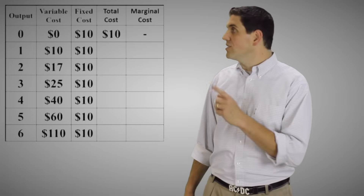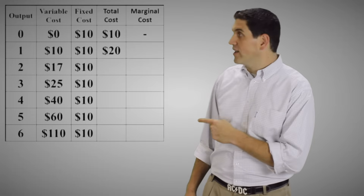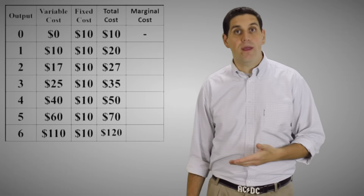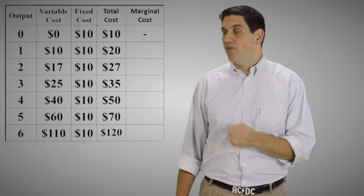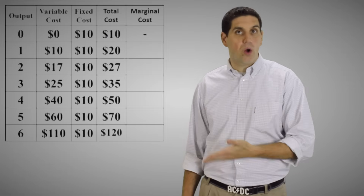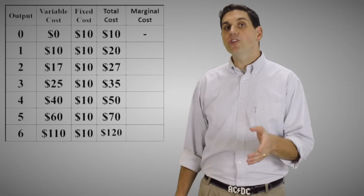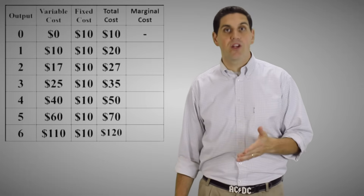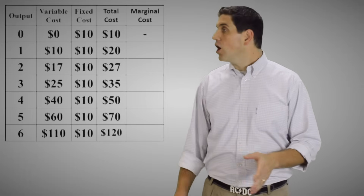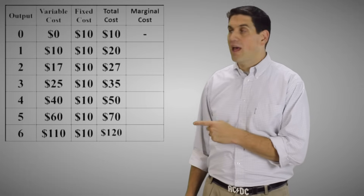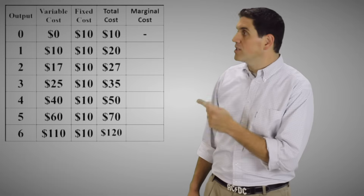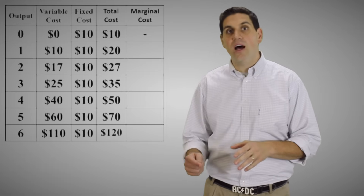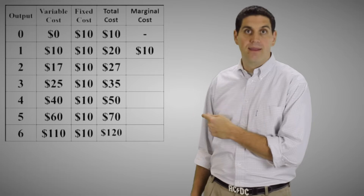For one unit it's $20. For two units it's $27. Then $35, $50, $70, and $120. And it's really that simple — variable cost plus fixed cost equals total cost. The marginal cost is the change in total cost from producing an additional output. So if the total cost of producing nothing is $10 and the total cost of producing one unit is $20, the additional cost of that first unit must be $10.